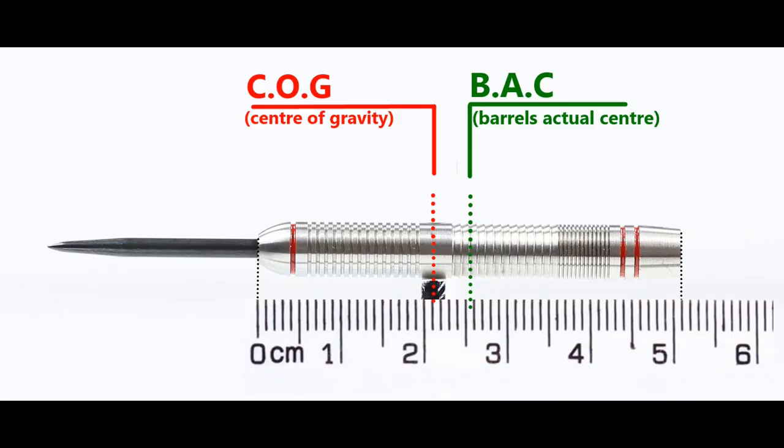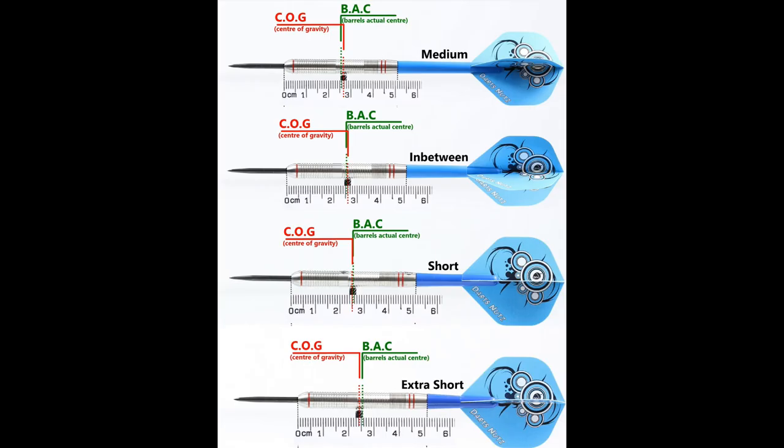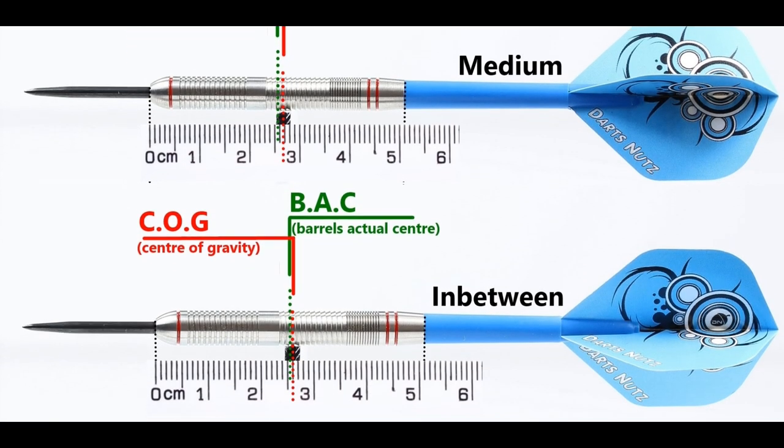With nothing attached the balance is front weighted and with the supplied setup it moves right into the centre and this is the balance point with medium in between short, extra short stems and standard flights.